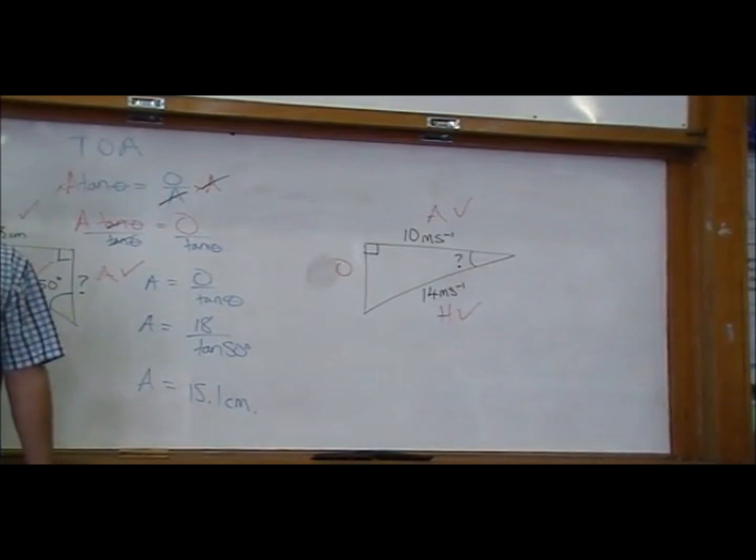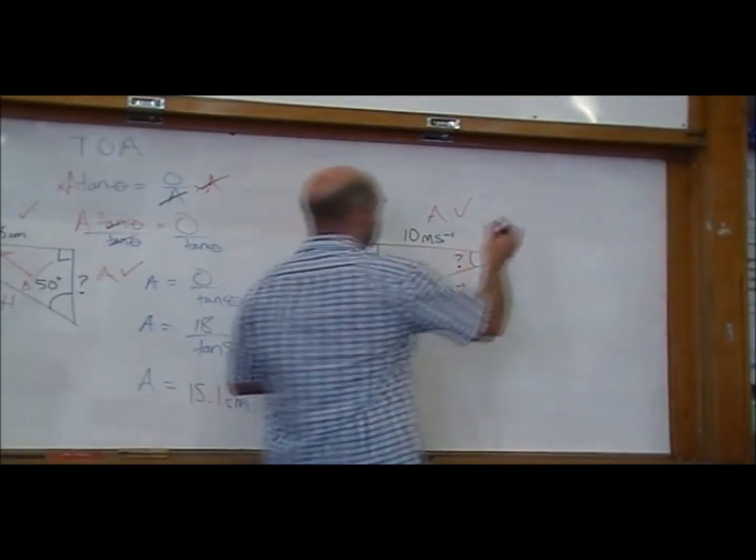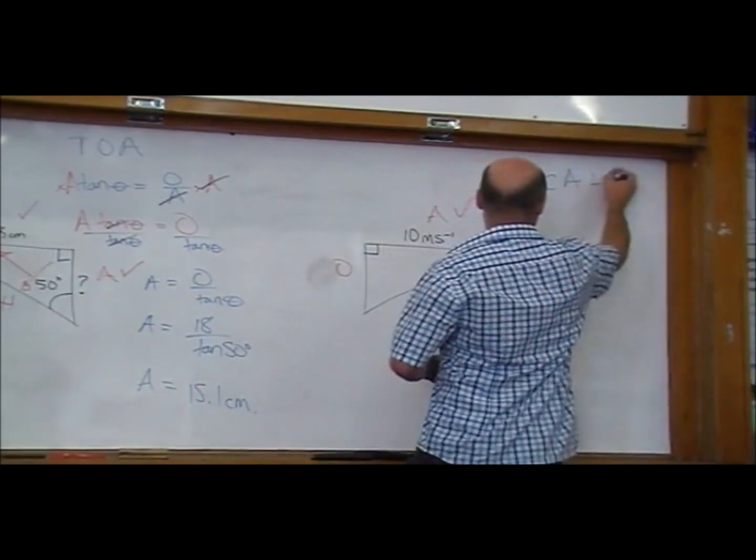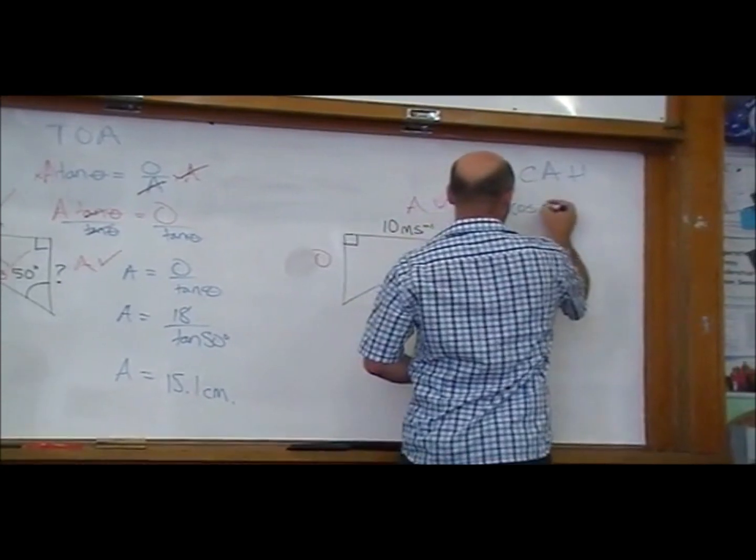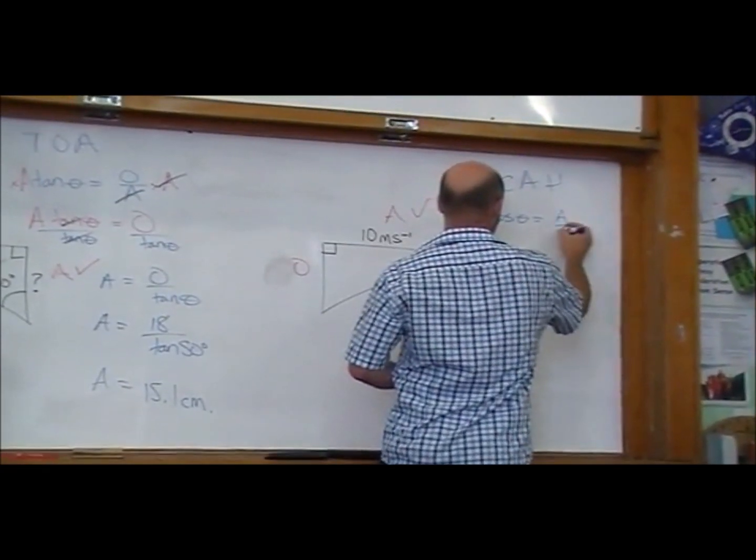I'm going to use cos. Good. So it says C, A, H. That makes us think cos theta is A over H.